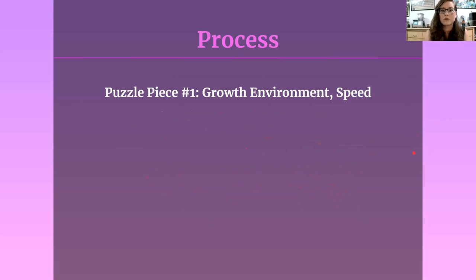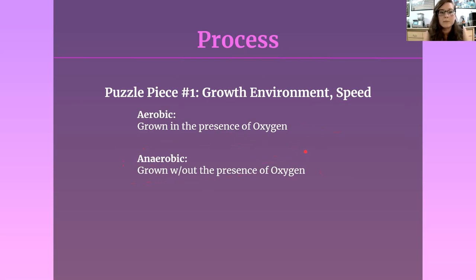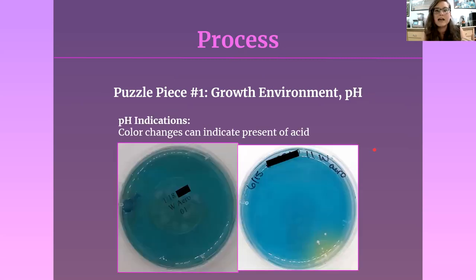The first piece of the puzzle is your growth environment and the speed at which the microbe grows. Aerobic means grown in the presence of oxygen — 'aero' meaning oxygen, 'bios' meaning life. Anaerobic means without oxygen. These two things really separate out a lot of different bacteria that can grow in beer, because beer itself doesn't actually have any oxygen available for bacteria. If something is able to grow in an anaerobic environment, it's also able to grow in beer. Speed is simply the number of days from when you inoculate the plate to when you first see growth — check the plate every day.